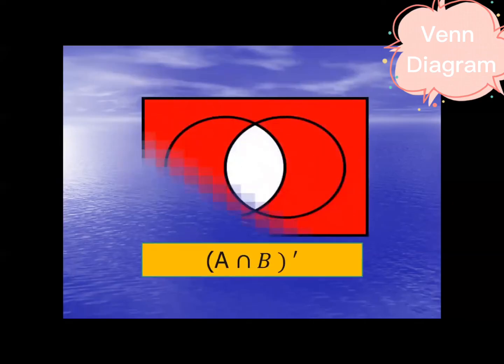What about this one? This is the complement of A intersection B. The color red here. Since complement is element of the universal but not in the given set. So A intersection B is this center. So the complement of this one is outside A intersection B. So A intersection B complement.